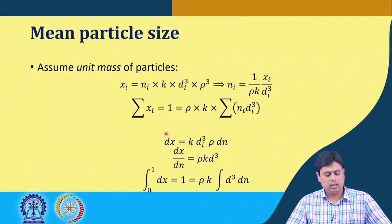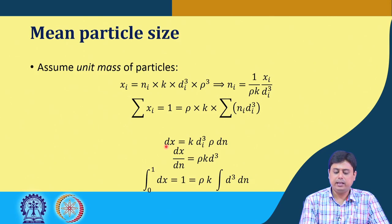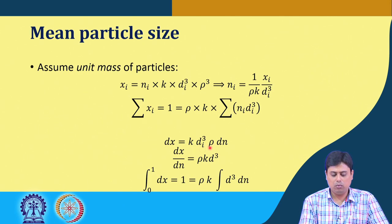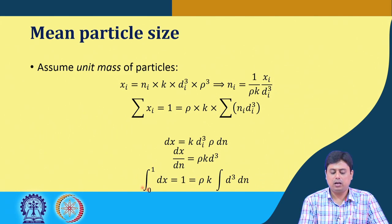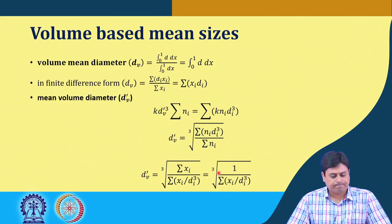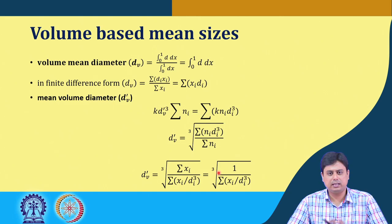If we try to represent the size distribution by a continuous mass function, then d(x) = k · d³ · ρ · d(n), and d(x)/d(n) = ρ · k · d³. The integral of the mass fraction from 0 to 1 is 1, given in continuous form. Coming to mean size calculation based on certain criteria — the mean size can be based on volume, surface, or length — we will discuss these sequentially.